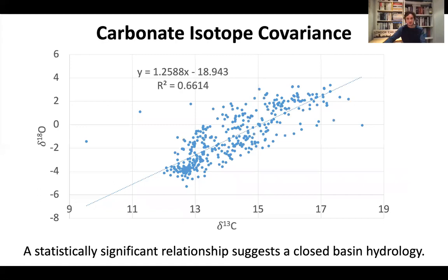This is the record from Lake Nahr, and it shows that generally when you have higher delta-18O you also have higher delta-13C — a statistically strong relationship suggesting a closed basin hydrology throughout the record.